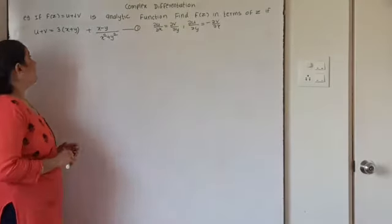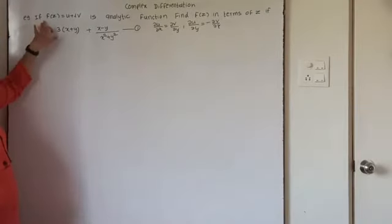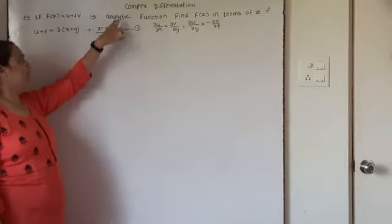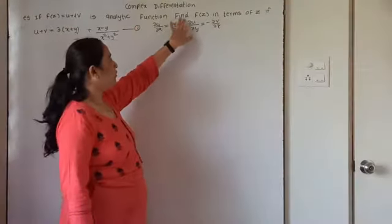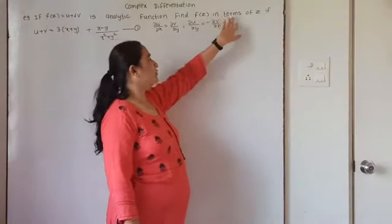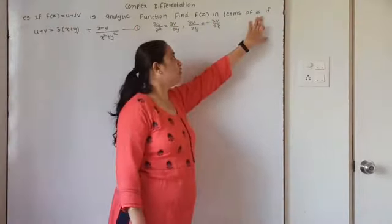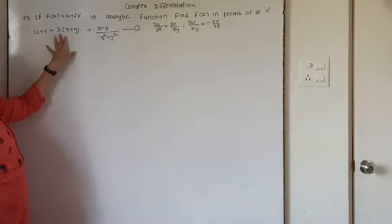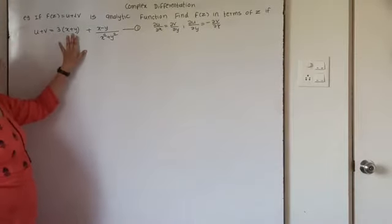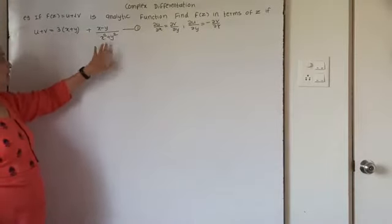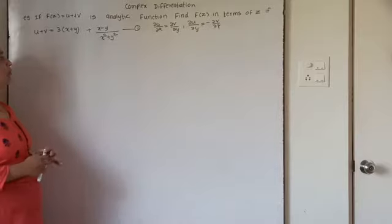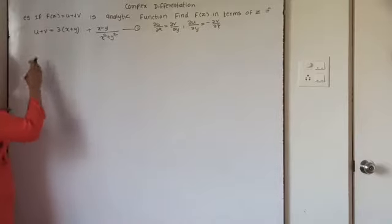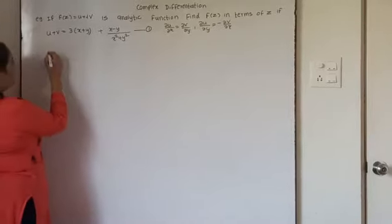We will take one more example. If f(z) equals u plus iv is an analytic function and we want to find f(z) in terms of z, given that u plus v equals 3 times [(x plus y) plus (x minus y)] upon (x squared plus y squared). Now if I say this as equation number 1.